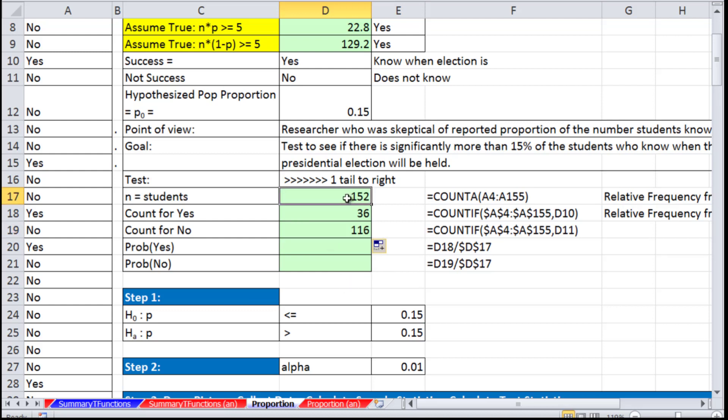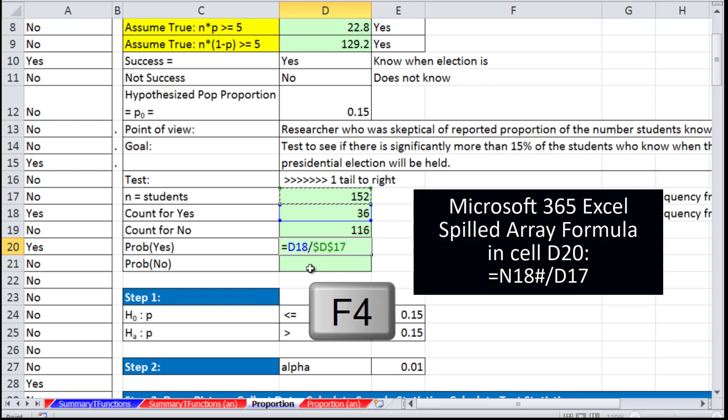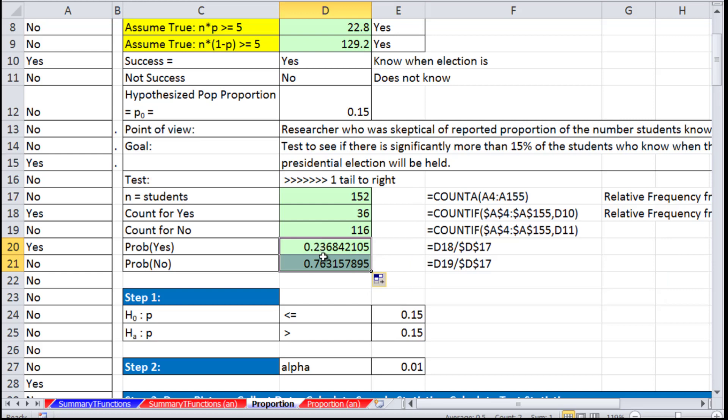This is our total. The part divided by the whole, F4. We have a probability yes of about 0.24 and about 0.76.